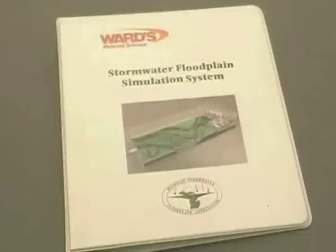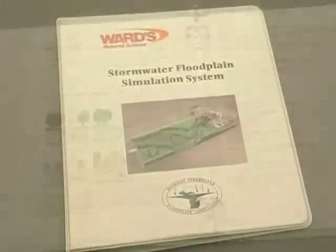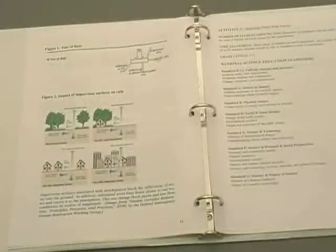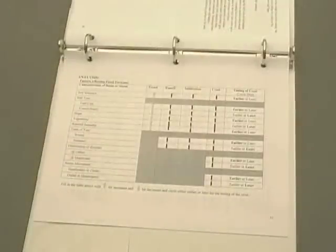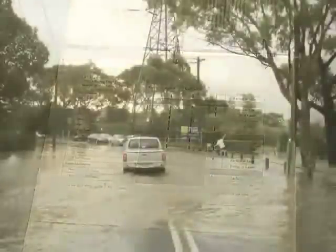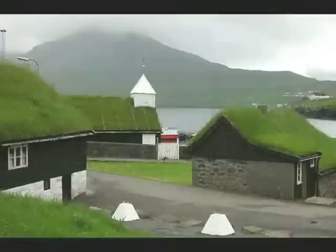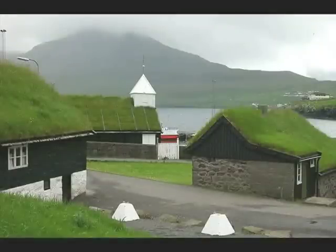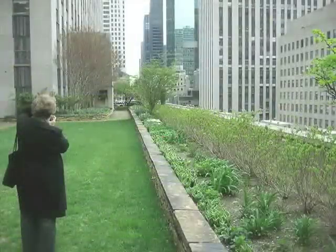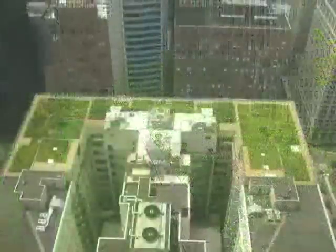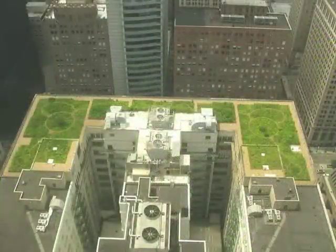An in-depth curriculum guide will provide useful background information and lab procedures and will also introduce students to important new concepts such as no adverse impact, turn around don't drown, runoff footprint, green gardens, green roofs, and porous pavement — all new tools in the management of our critical watershed resources.